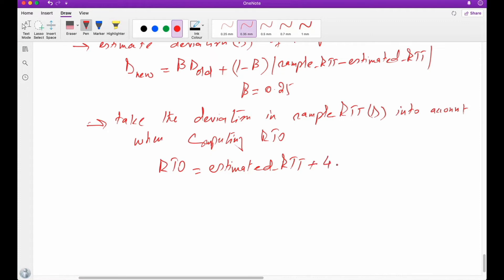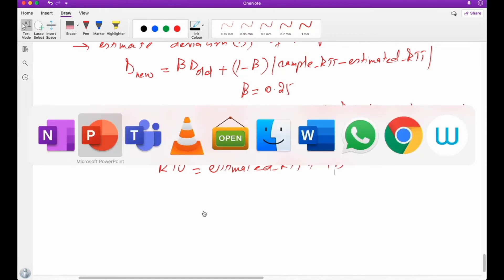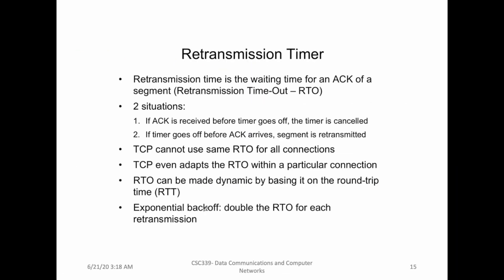So this is how we calculate the retransmission timeout. Now this retransmission timeout takes into consideration not only RTT by calculating this estimated RTT, but it also takes into consideration the deviation by calculating deviation in sample RTT into consideration using this formula.